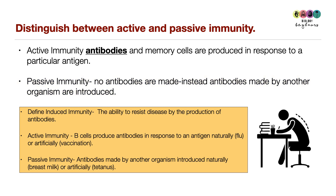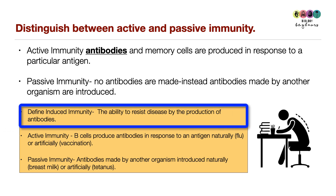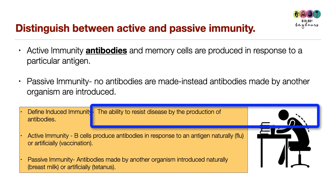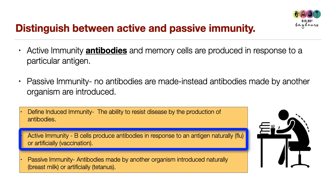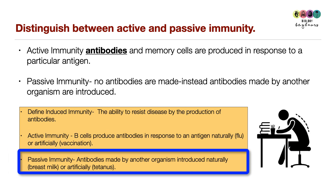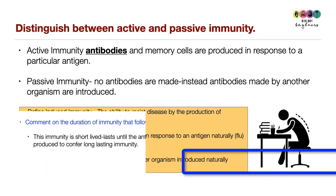Induced immunity is the ability to resist disease by the production of antibodies. Active immunity occurs when B cells produce antibodies in response to an antigen — this can happen naturally (e.g. flu) or artificially through vaccination. Passive immunity is where antibodies made by another organism are introduced naturally (e.g. breast milk) or artificially (e.g. a tetanus shot).